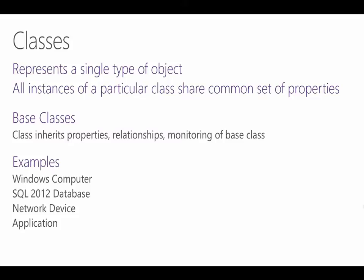The individual items represented by a class are called instances. For example, we have a class for a SQL database, and each database that we discover is an instance of the SQL database class. All instances of a class share the same set of properties, although they may have different values for those properties.